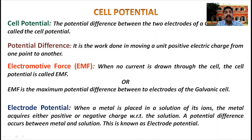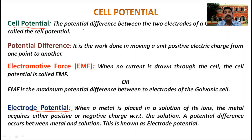In our previous lecture we covered up to electrode potential. Cell potential is the potential difference between the electrodes in a galvanic cell. EMF is the maximum cell potential — when no current is drawn from the cell, the cell potential is known as the EMF of the cell.